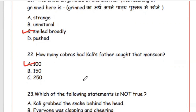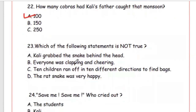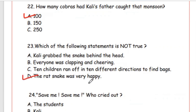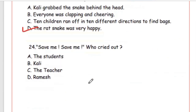Question 23: Which of the following statements is not true? Options: Kali grabbed the snake behind the head; everyone was clapping and cheering; ten children ran off in ten different directions to find bags; the rat snake was very happy. The statement that is not true is Option D — the rat snake was not happy; it was the children who were happy because the snake was caught.